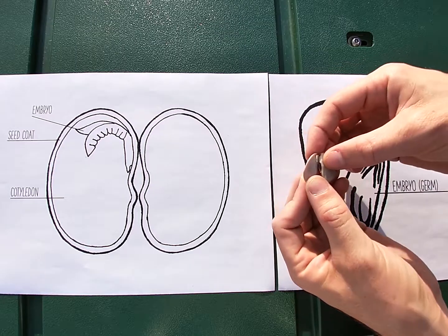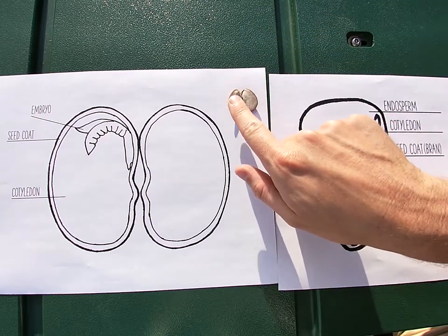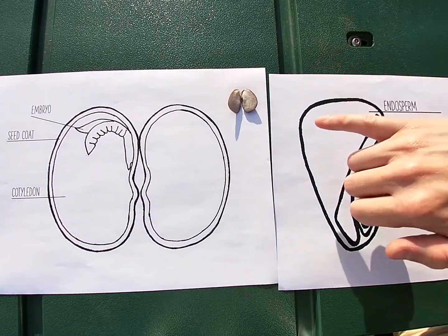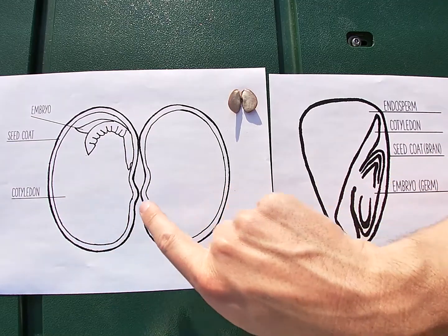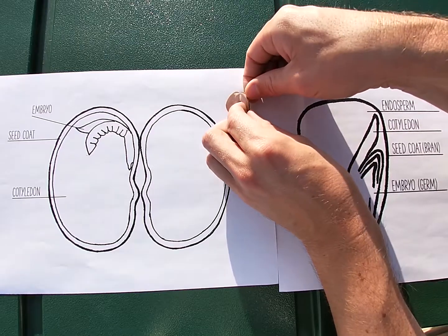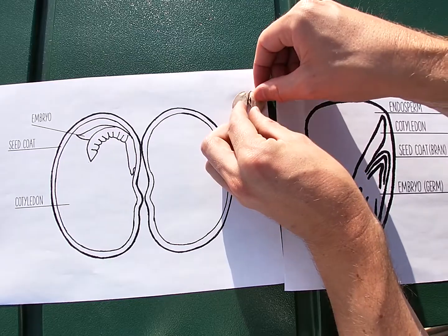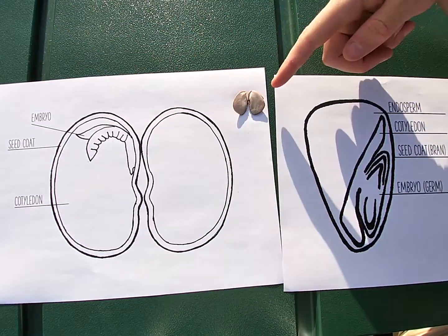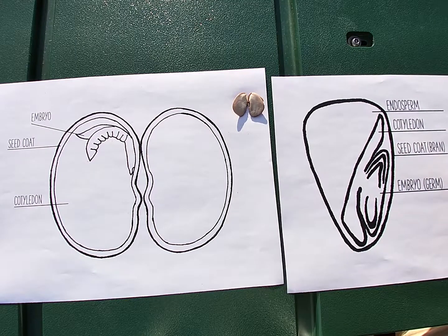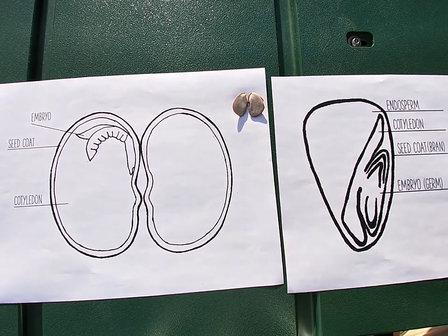I've soaked this seed overnight so it's nice and flexible and I can open it up. So right here we have the two cotyledons — that's here and here. The seed coat is this outer skin, this protective layer, which I can actually peel off. And then right here is the embryo — this is the baby plant. When this seed germinates and begins to grow, this embryo will start growing and the leaves and roots will grow from there.